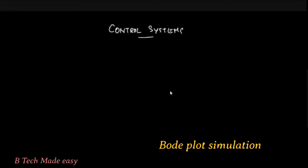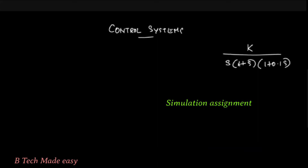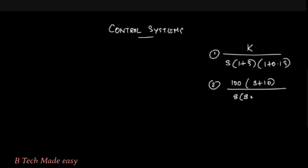Let's take a look at 3 open-loop transfer functions. The first one is k divided by s into 1 plus s into 1 plus 0.1s. The second one is 100 into s plus 10 divided by s into s plus 2 into s plus 5. This is in time constant form.